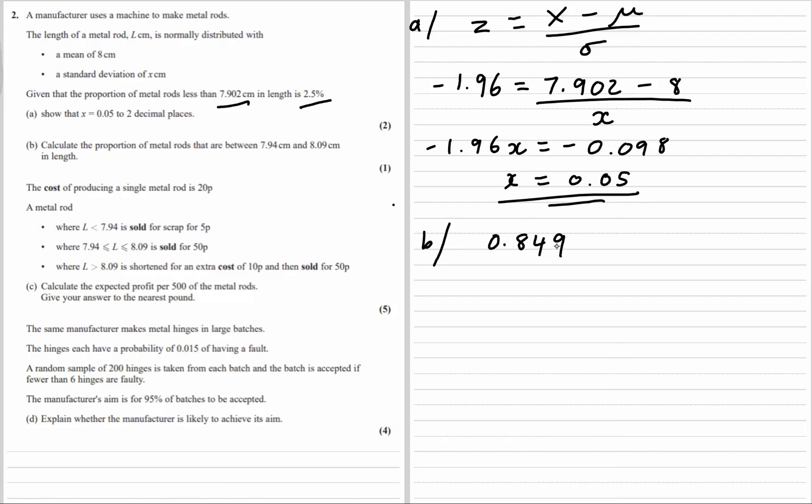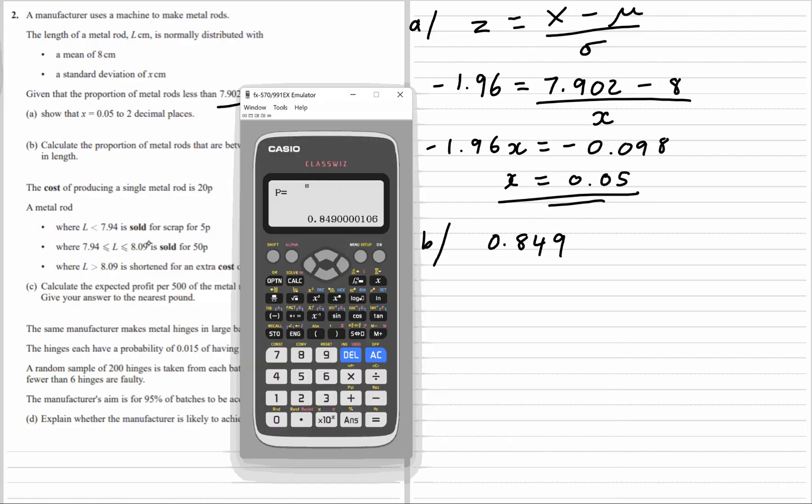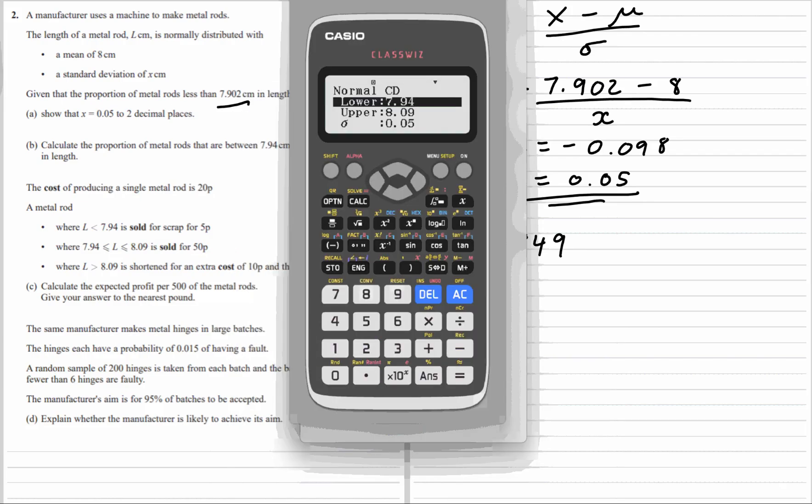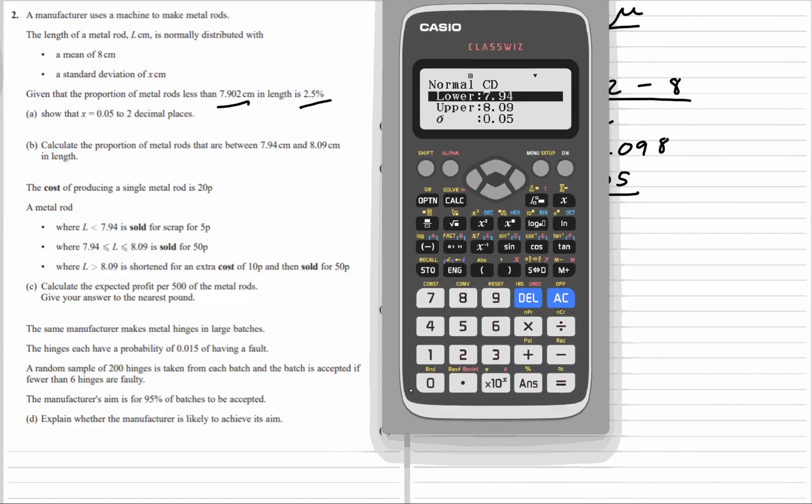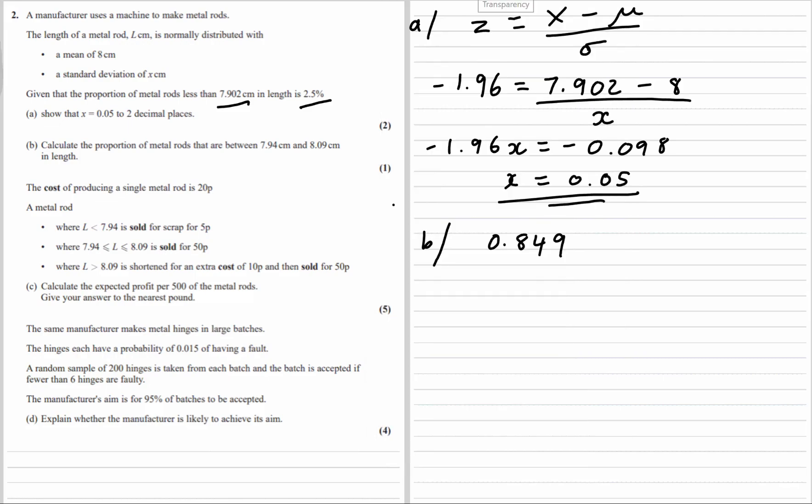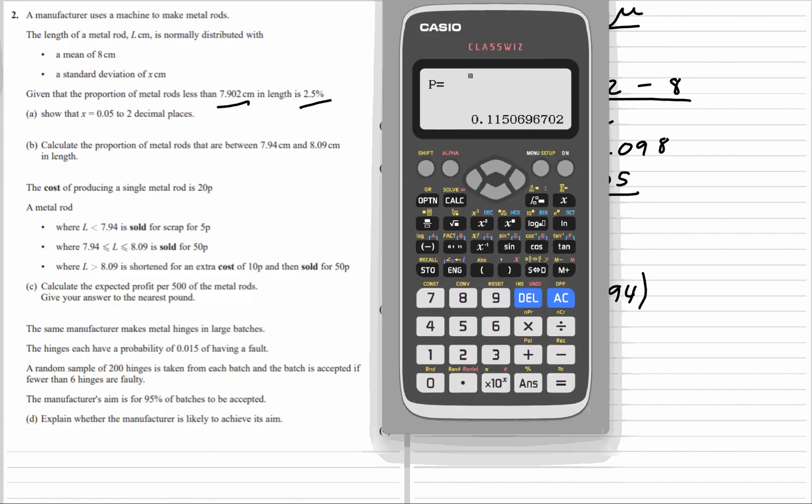The cost of producing a single metal rod is 20p. So when L is less than 7.94, let's go back into this. So let's put the lower as 0 and the upper is 7.94. So that's 11.5%, 0.115. So the probability that x is less than 7.94 is 11.5%.